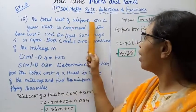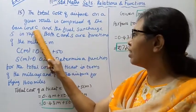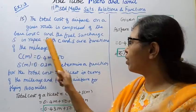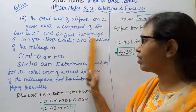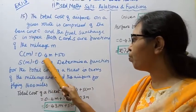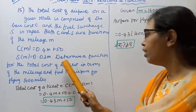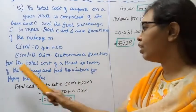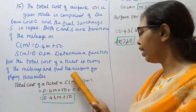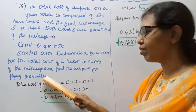The total cost of airfare on a given route is comprised of the base cost C and the fuel surcharge S in rupees. Both C and S are functions of the mileage M. C(M) = 0.4M + 50, S(M) = 0.03M. Determine a function for the total cost of a ticket in terms of the mileage, and find the cost of flying 1600 miles.